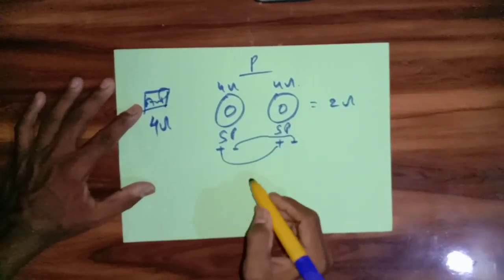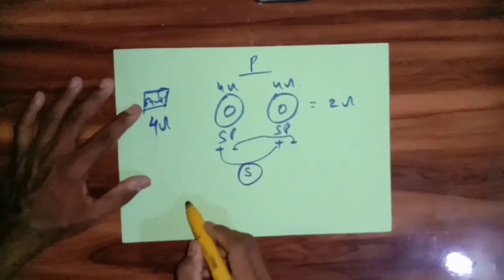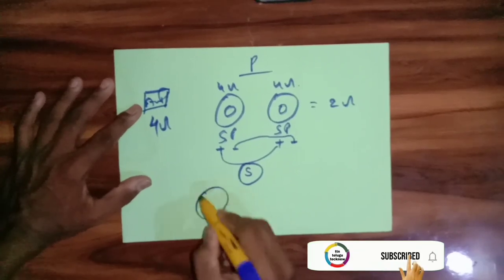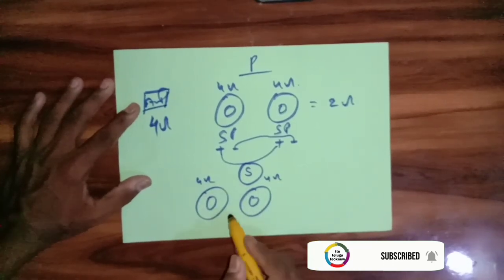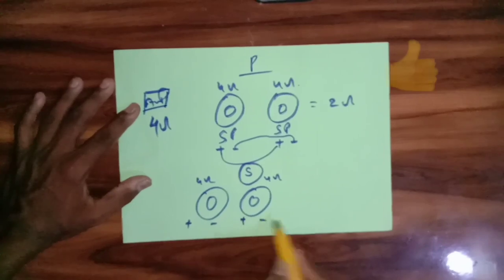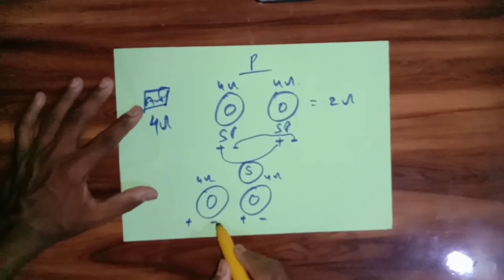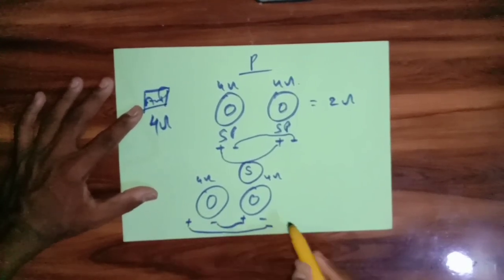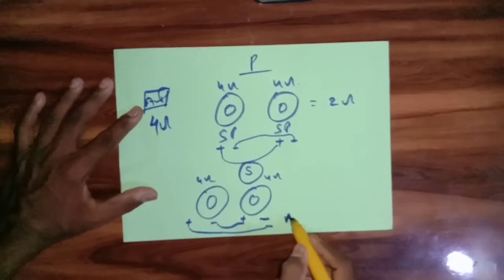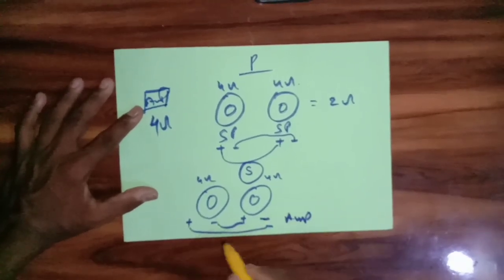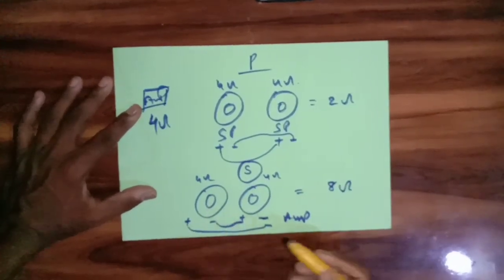Okay, now the series law. In a series connection, the speaker forums add up — so minus, plus, it equals plus. Series connection: 4 plus 4 equals 8 Ohms. Okay.